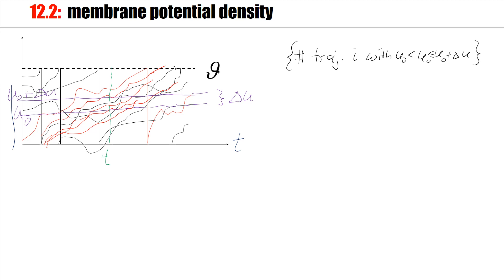I would like to transform this into a density. And I think of a large population of neurons. I'm interested in the fraction of neurons. So I divide by a total number big N of neurons, capital N. And then I ask, what fraction of neurons in that large population has a membrane potential between u0, the lower reference, and u0 plus delta u, which is the upper reference.